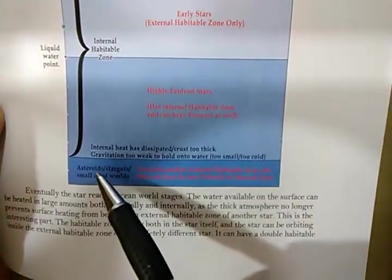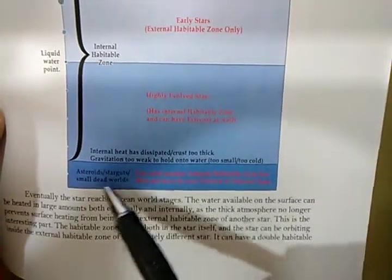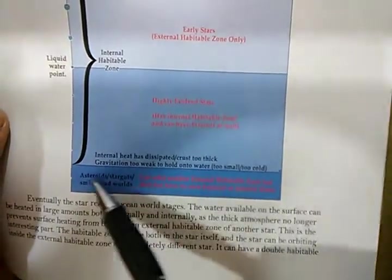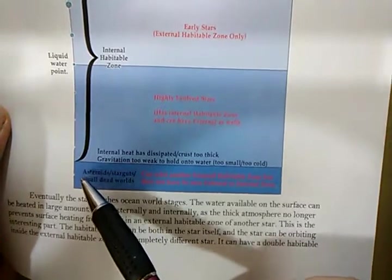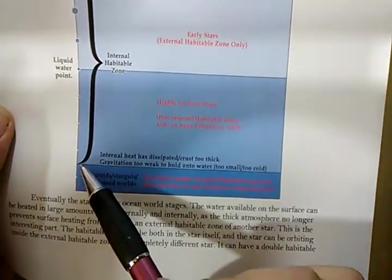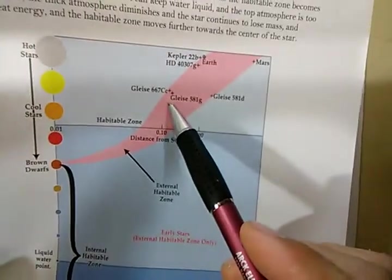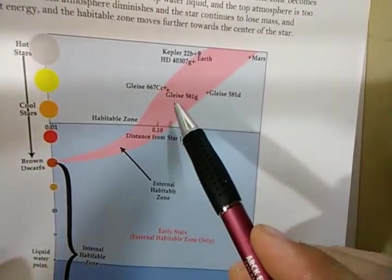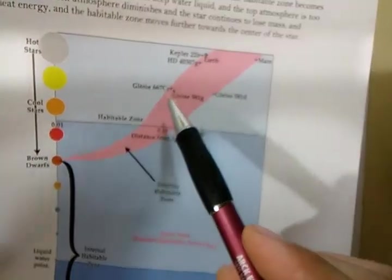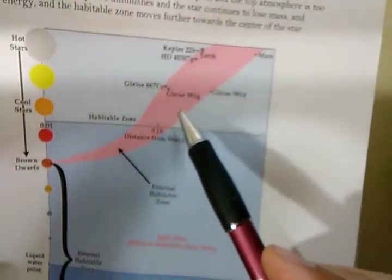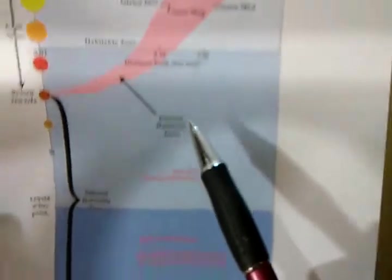And at the very end, you have asteroids, starguts, small dead worlds, and these don't have internal habitable zones. These are too cold and dead and rocky, but they could probably orbit one of these objects up here inside this area. And if it has any water, it could sustain liquid water on the surface for very short periods of time, maybe, who knows.